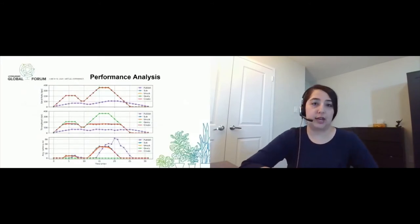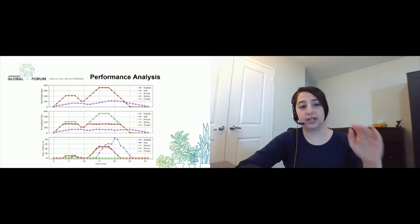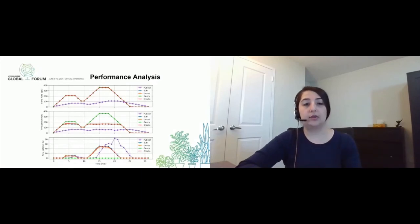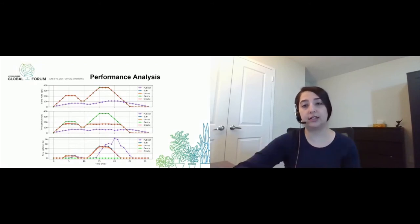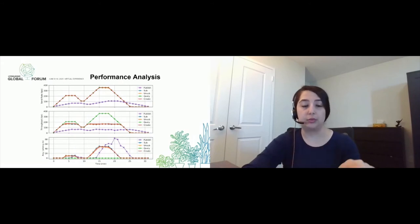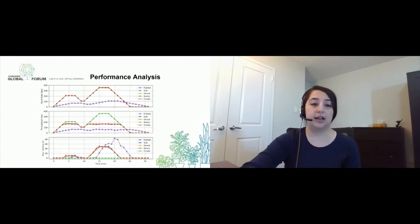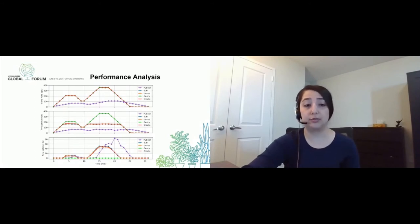I mentioned earlier that we used Hyperledger Caliper to analyze the performance of our network. What we did was change the transaction send rate, shown on the top, throughout time, and we monitored the throughput and the average latency for all the functionalities that our broker blockchain supports. There are a lot of details in this plot, but one thing I want to mention is that the publish-to-topic functionality — which is the purple one — is actually our bottleneck. We can see that we couldn't even increase the send rate as much as we did for the other functionalities, and the throughput gets limited really fast while the average latency increases to up to 80 seconds.